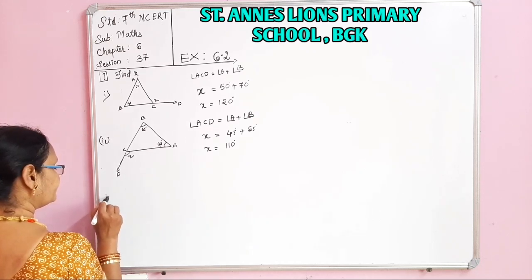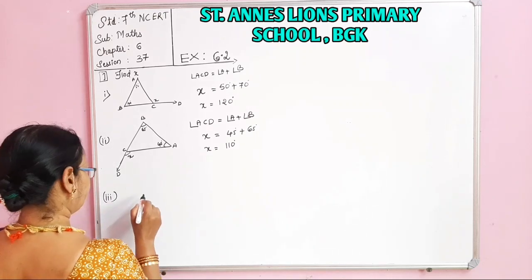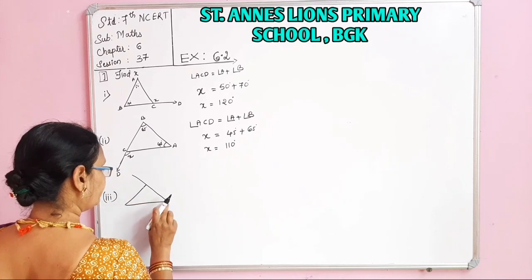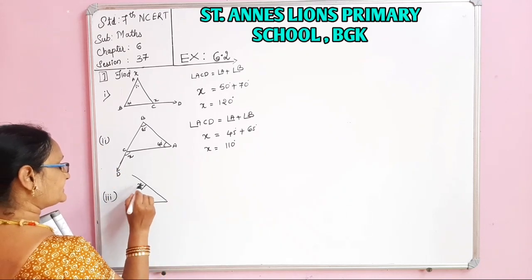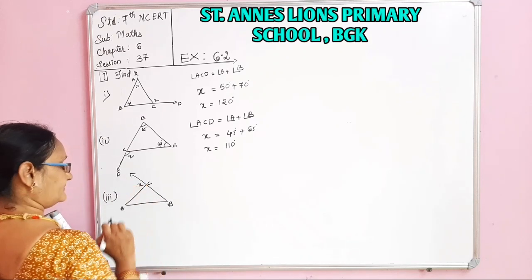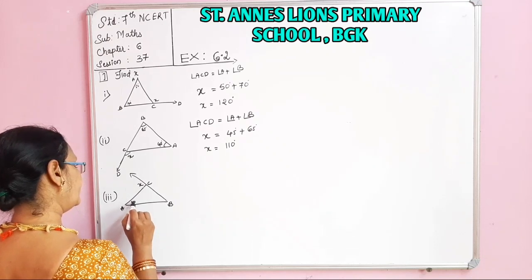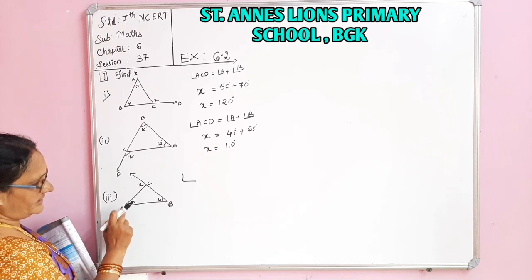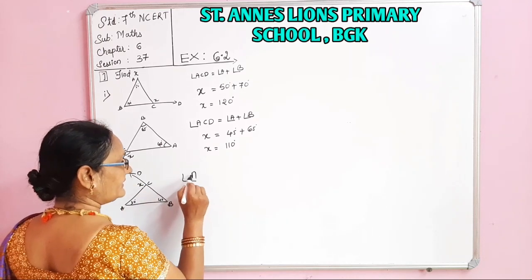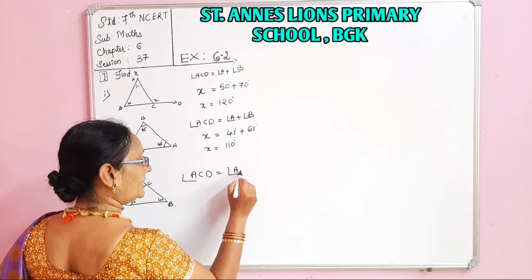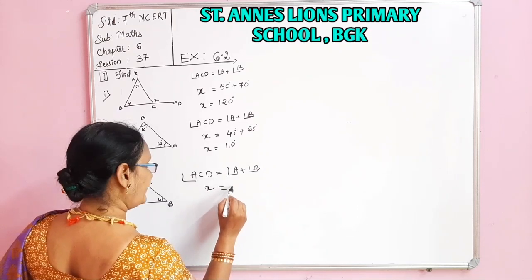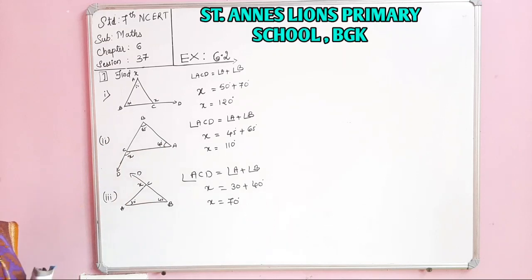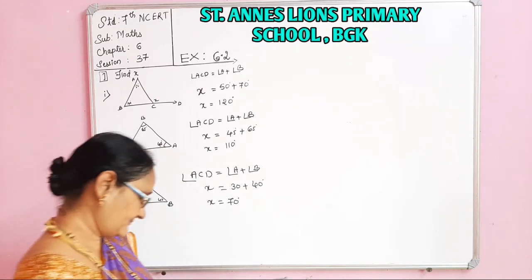Next, the third one. Triangle ABC with angles 30 and 40 given. Angle ACD is equal to Angle A plus Angle B. ACD is X, Angle A is 30 plus Angle B is 40, so X is equal to 70 degrees.